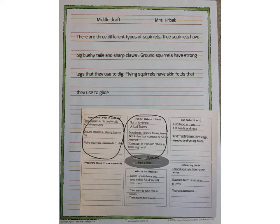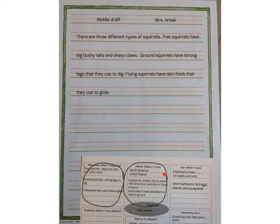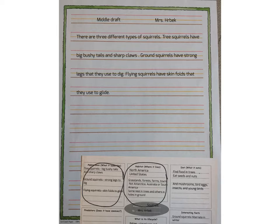Now that I've written my one sentence that introduces my topic and my sentences that tell my facts, I'm ready to go on to the next paragraph. Take your work and look at the second category you circled. Skip a line and write an introduction sentence on the next line. For my next category, since it's about where squirrels live and my facts tell all different places, I'll write: 'Squirrels live in lots of different places.' Then pick the facts you want to write about and write a sentence about each of those facts on the lines that follow. When you've skipped a line and written your sentence and your facts below, you're ready to go on to the next step.